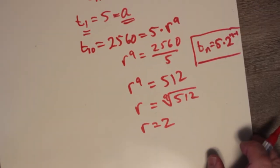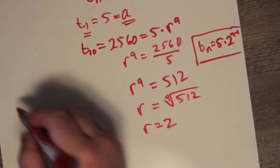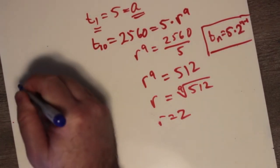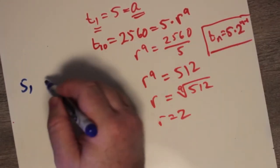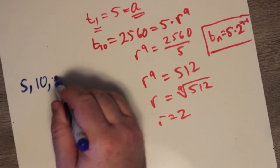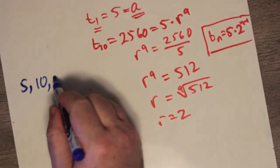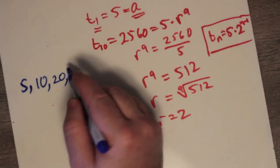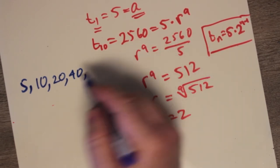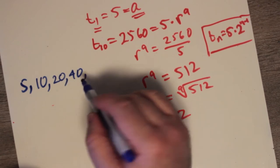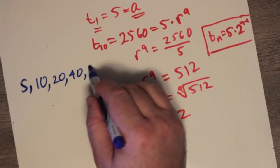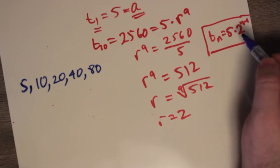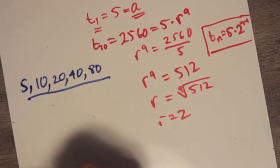That means for the first 5 terms: T1 is 5. The next term is 5 times 2, which is 10. The next is 5 times 4, which is 20. The next is 5 times 2 cubed, which is 5 times 8, equals 40. And then — notice every successive member is just multiplied by 2 — the next one must be 80. That's 5 times 16, or 5 times 2 to the power of 4, which is 80.